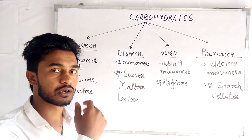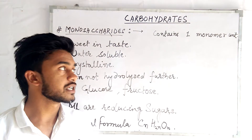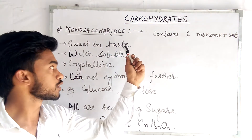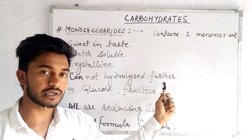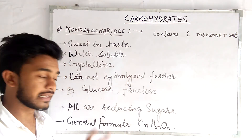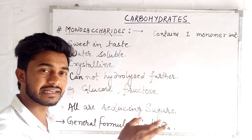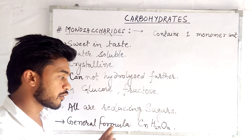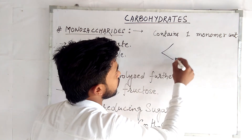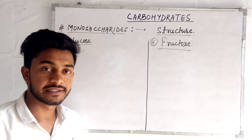Monosaccharides contain a single sugar unit; they are the monomers. They are sweet in taste, water-soluble, and crystalline. They cannot be hydrolyzed further. They are all reducing sugars and give a positive Fehling's and Tollens' reagent test. The general formula for monosaccharides is CₙH₂ₙOₙ.